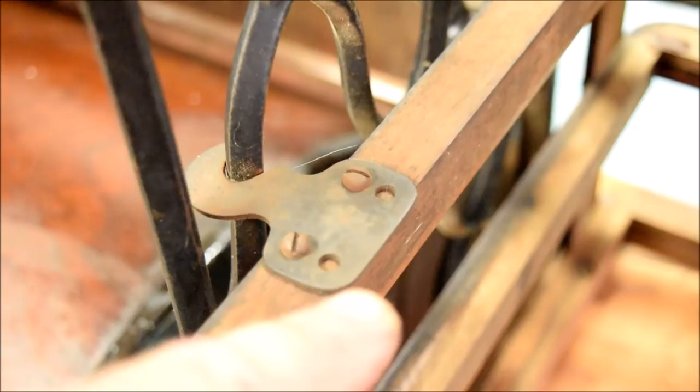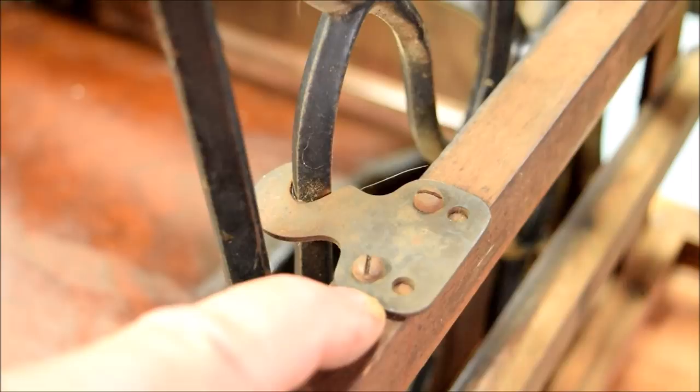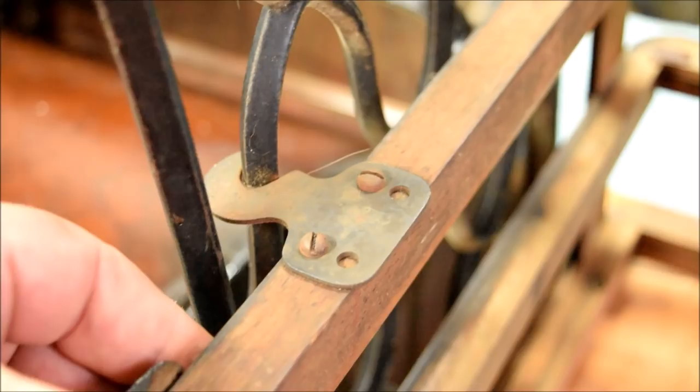The next step in the disassembly is the removal of these hooks. They are mounted to the underside of the drawer cases and they merely keep the drawer case from swinging out. They just hook behind the cast iron base side. They come out with four screws.